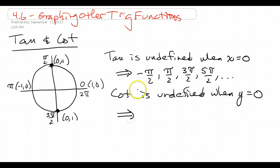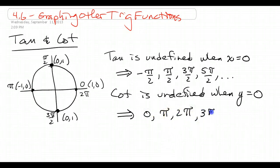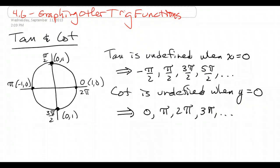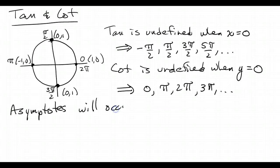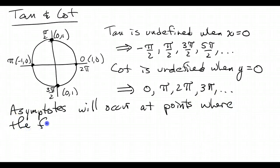So y is going to be 0 any time we're on the x-axis — at 0, at pi, at 2 pi, 3 pi, and so on. So at these spots, when we're trying to graph tangent and cotangent and we hit a spot where it's undefined, we're going to end up with an asymptote. Asymptotes will occur at points where the function is undefined.